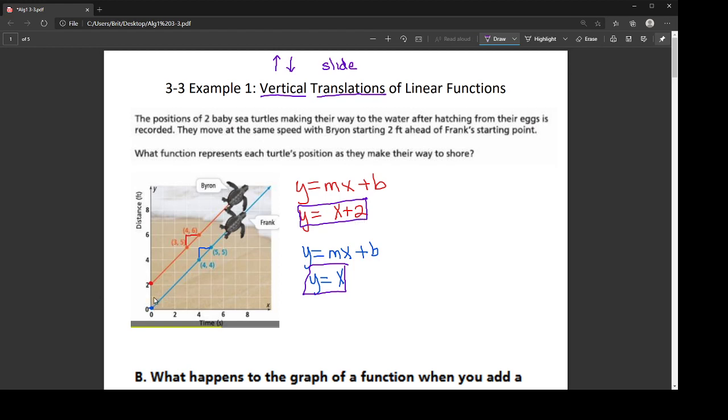So notice that those two lines are parallel. They have the same slope. But Byron's is always 2 units higher than Frank's. Alright, so we have these two equations and this plus 2 shows where it moved up by 2.